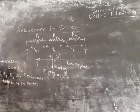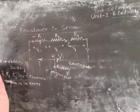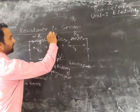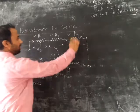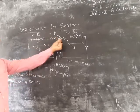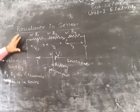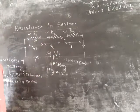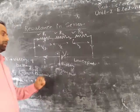Current I enters from this wire and goes to the first resistance R1. These resistances are connected in series — R1, R2, and R3 are all connected in series, and the same current passes through R2. This is the basic feature of resistance in series: the current is the same in all resistors when they are connected in series, under all load conditions.